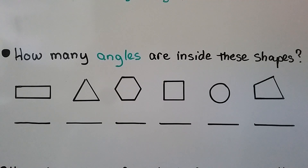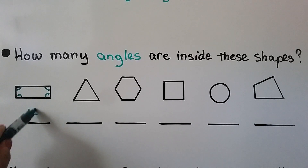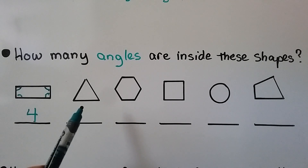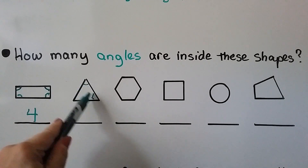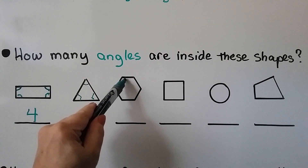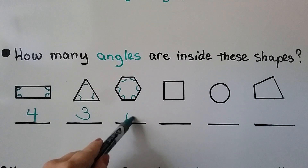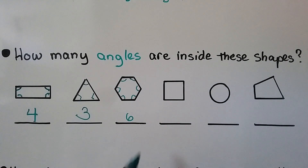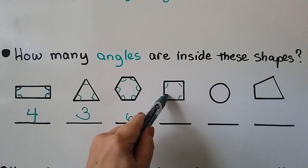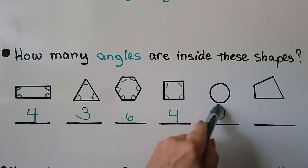How many angles are inside these shapes? Let's count. This one has four angles: one, two, three, four. The triangle has one, two, three. The hexagon has one, two, three, four, five, six. The square has one, two, three, four. How many angles are inside that circle? Do you see any corners? It's curved, so there are zero angles in a circle.